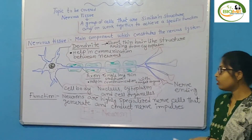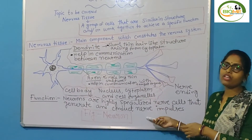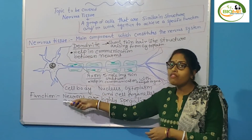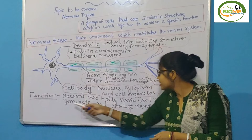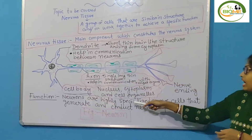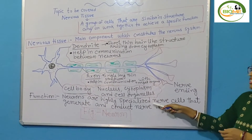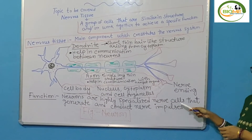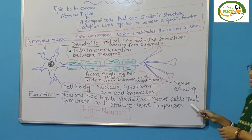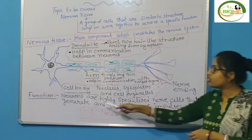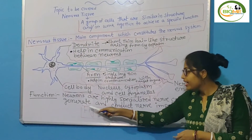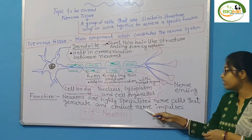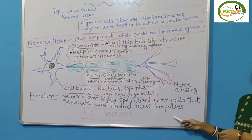So from that we can conclude: the neuron's function is that it is a highly specialized nerve cell that generates and conducts nerve impulses.